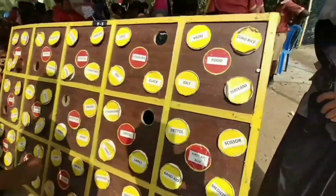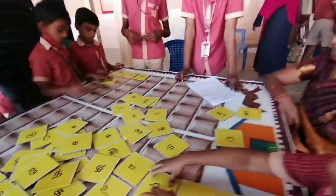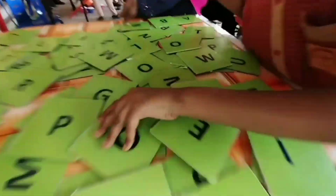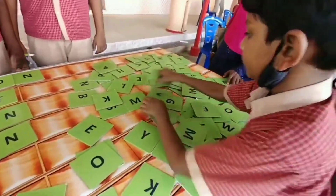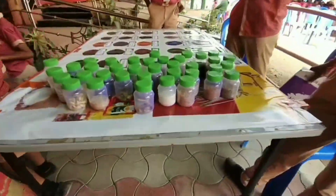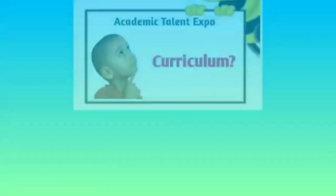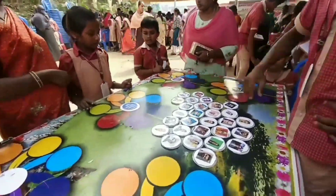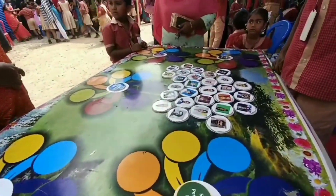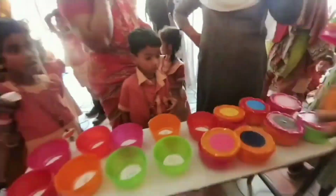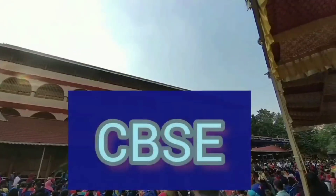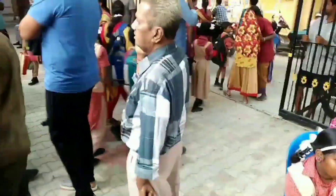By playing this, the child registers the concepts of lessons never to forget. Academic Talent Expo is created for students from 1st to 8th standard. Here they find all that they see in the textbook, like an exhibition. Activities on all subjects such as English, Tamil, Maths, Science, EVS, Social Education, and GK are carefully designed to cater to the needs of the primary level.